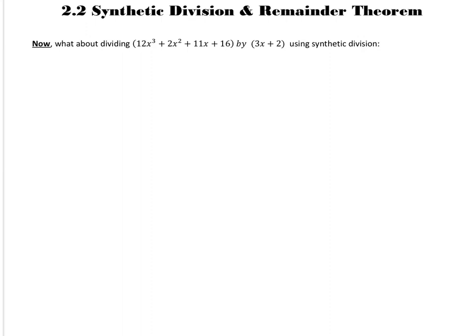So let's go ahead and look at our setup. We're going to set up our lines, and we're going to put our dividend at the top there like normal, or the coefficients. So we've got a 12. Don't forget about placeholders and in descending order of powers. We get a 2. We have an 11, and we have a 16.